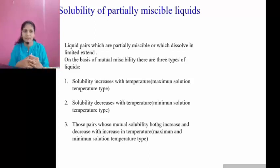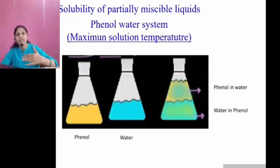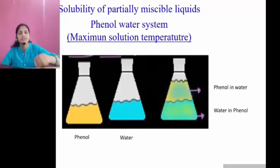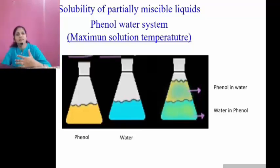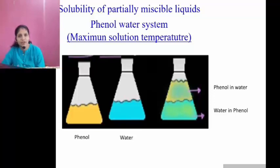This is an example of the first class, in which solubility increases with increase in temperature — that is, maximum solution temperature. The first conical flask is represented as phenol; the yellow color conical flask represents phenol, and the blue color conical flask represents water.